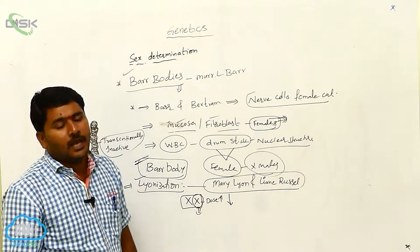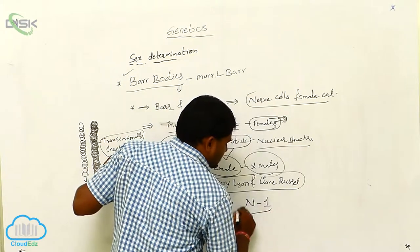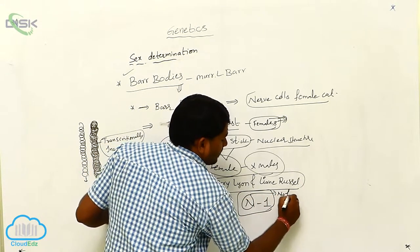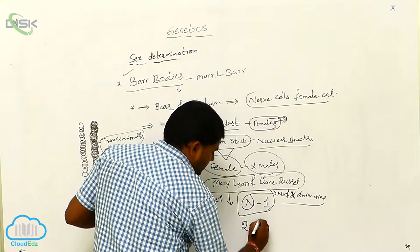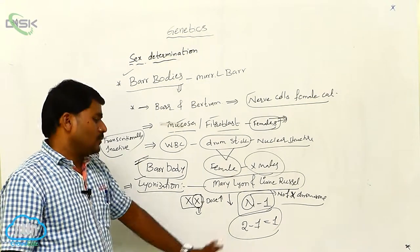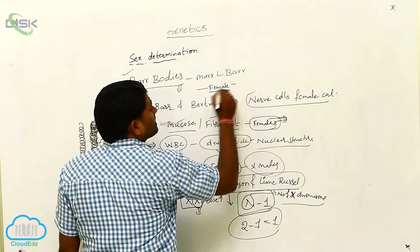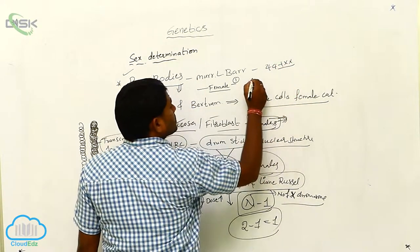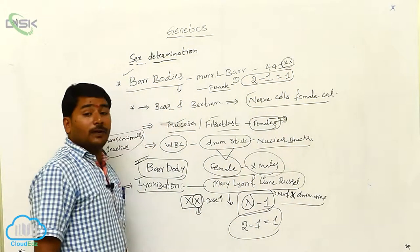How many bar bodies are present, and how can bar bodies be calculated? Bar bodies can be calculated by the N minus 1 principle, where N equals the number of X chromosomes. If two X chromosomes are present, bar bodies equal one. Normally in the female (44 XX), the number of X chromosomes is 2, so 2 minus 1 equals 1 — one bar body is present in normal females.